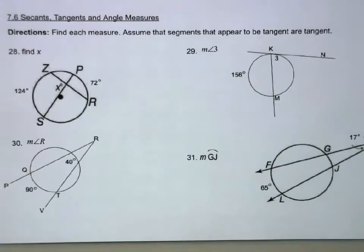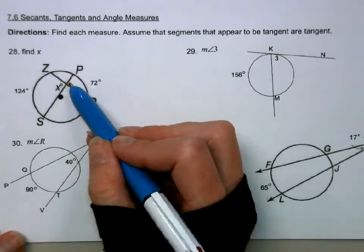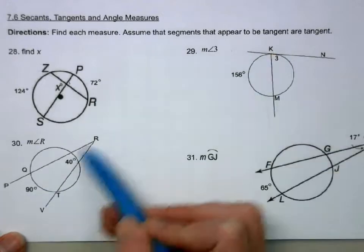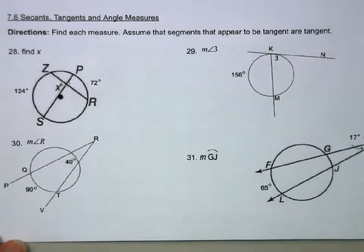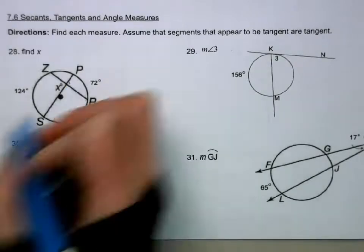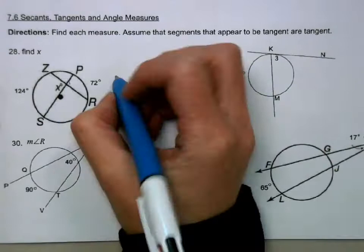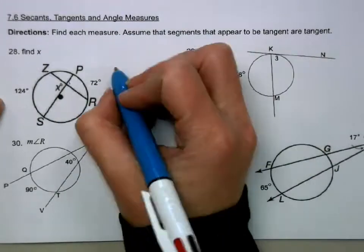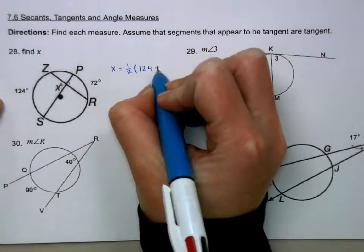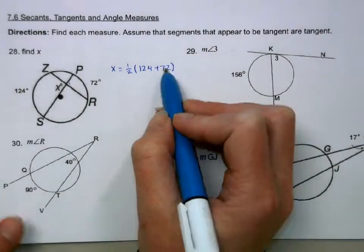In this next section, we have secant lines and tangent lines. And they either meet on the inside, we have the intersection. On the edge, we have an intersection. Or the intersection is on the outside. We handle all three of these different. If the intersection is on the inside, then the measure of this angle is the average of these two. So X is going to equal 1 half of 124 plus 72. If I add those up and divide by 2, we get 98.